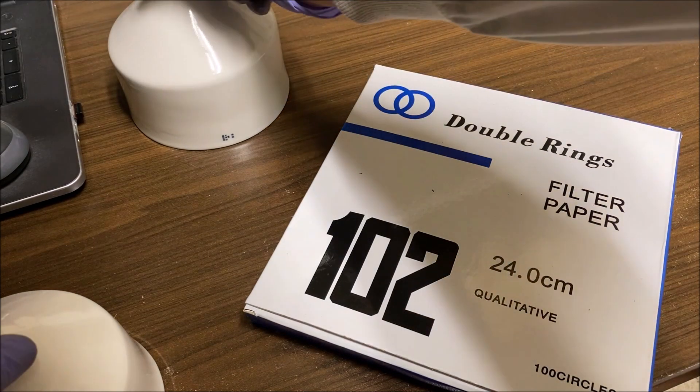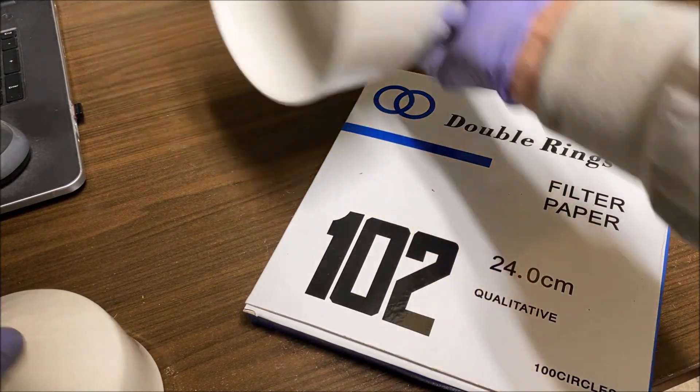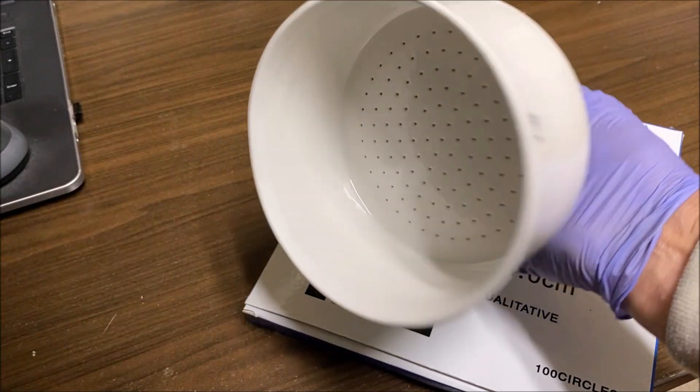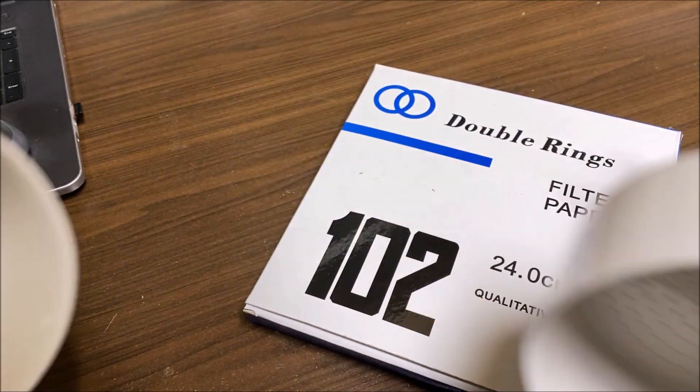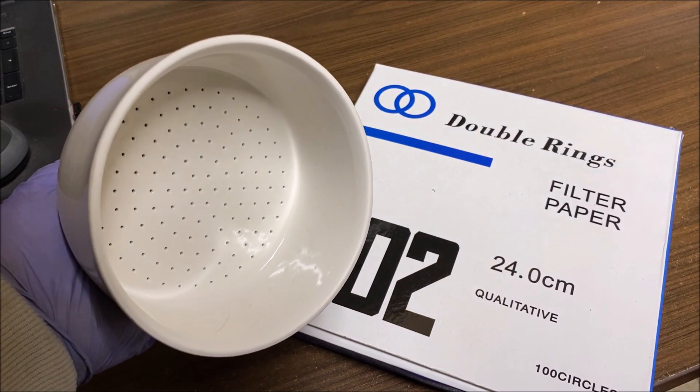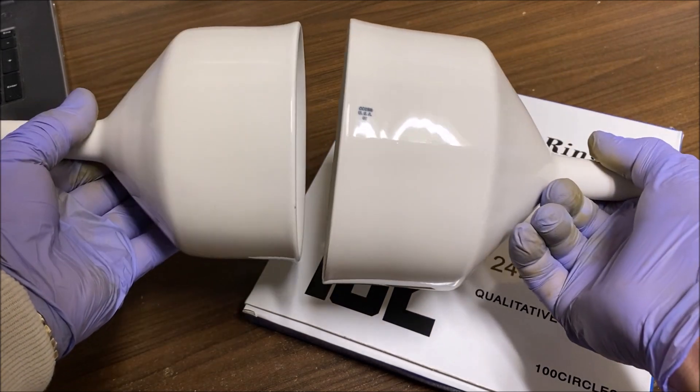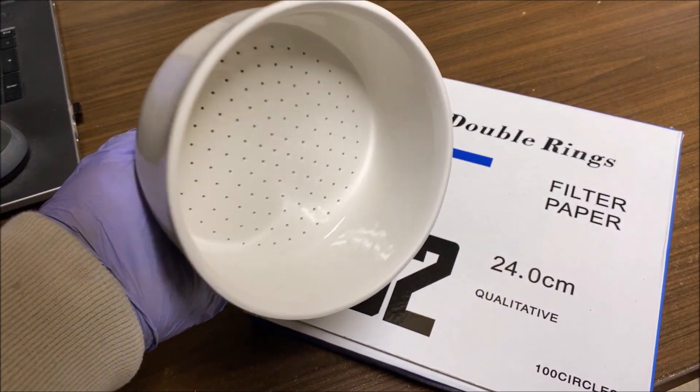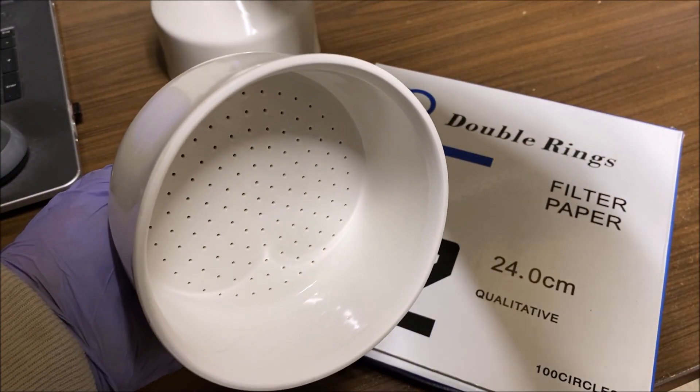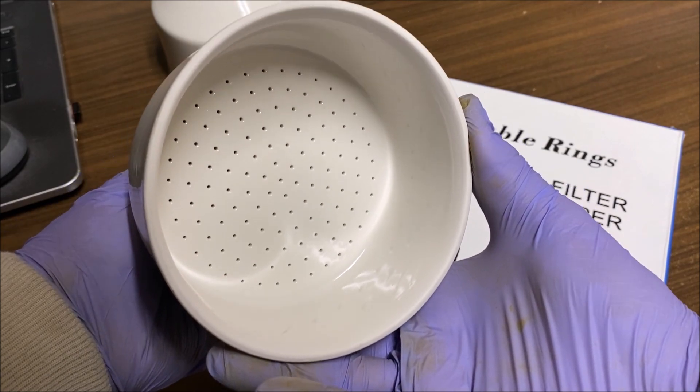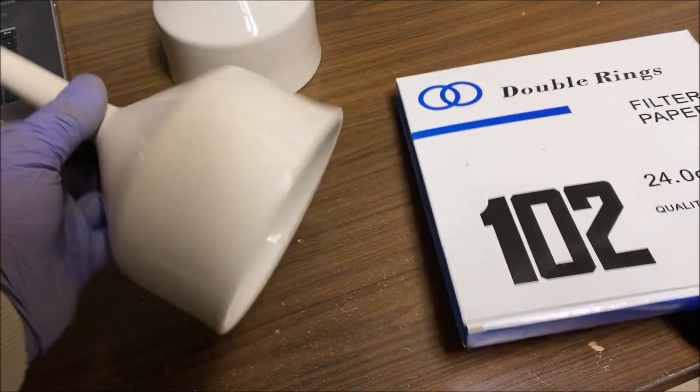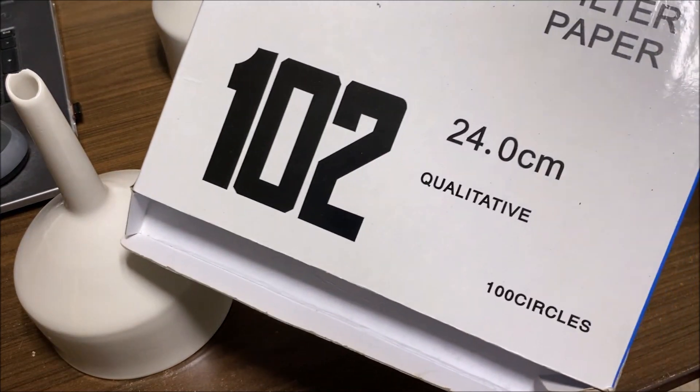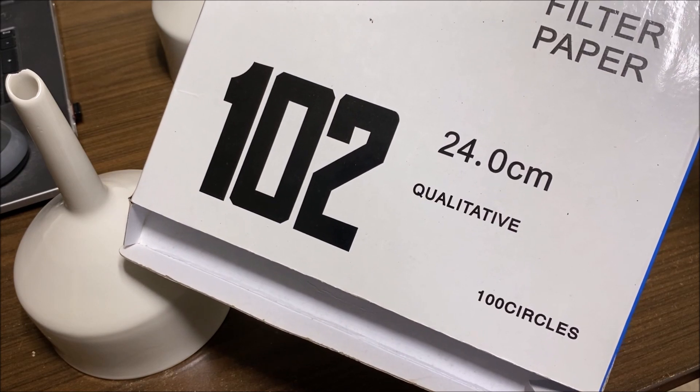One of my viewers asked how I made these filters to fit down in these funnels. I've got a 12.5 centimeter funnel here, and this is an 11 centimeter funnel that fits down in here perfectly. So what we're going to do is use the 11 centimeter funnel as a pattern to make our special filter. These are 24 centimeter filter papers.